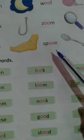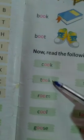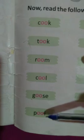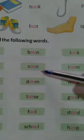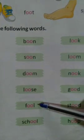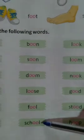Spool — S P double O, Spool. Next is book, took, room, cool, goose, pool, born, soon, door, lose, fool, school.